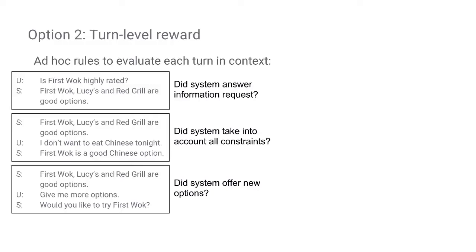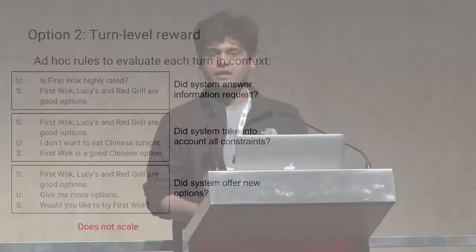Another option is to define ad hoc rules to evaluate each turn, which would punish each turn if it made a mistake. For example, some rules might be: did the system answer the information requests, did the system take into account all constraints, etc. However, this does not scale because there can be a lot of rules that define sensible conversational strategies.